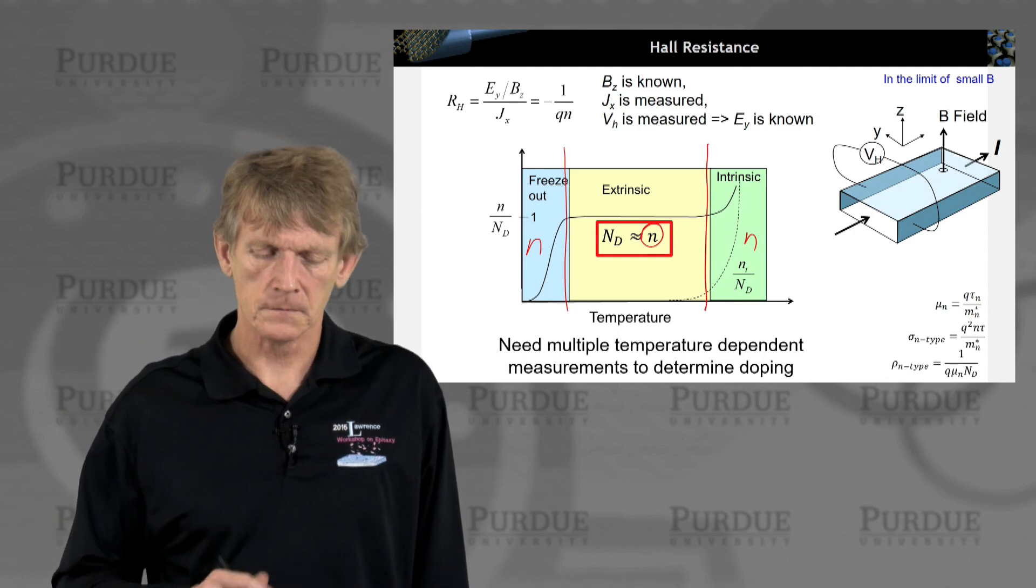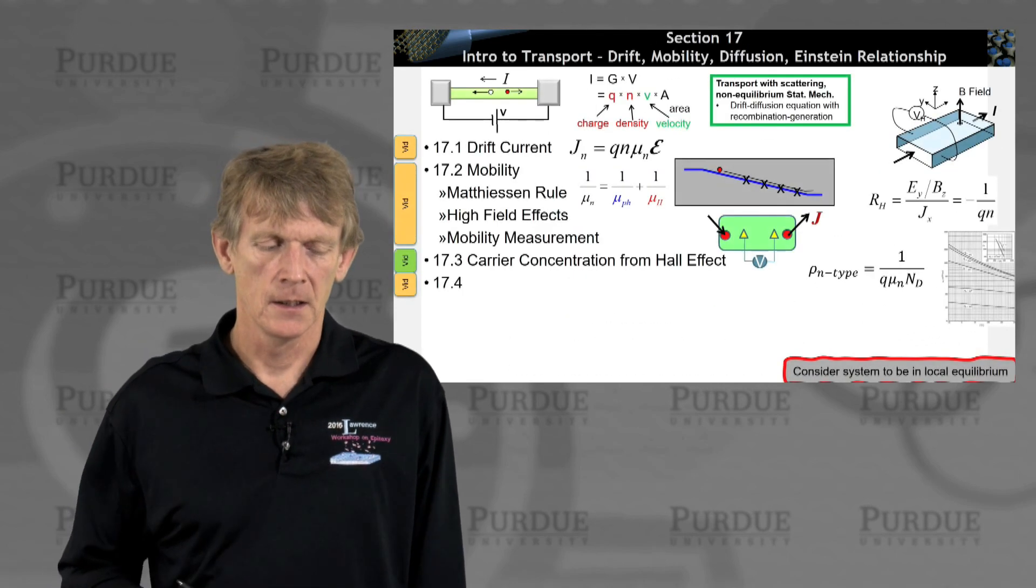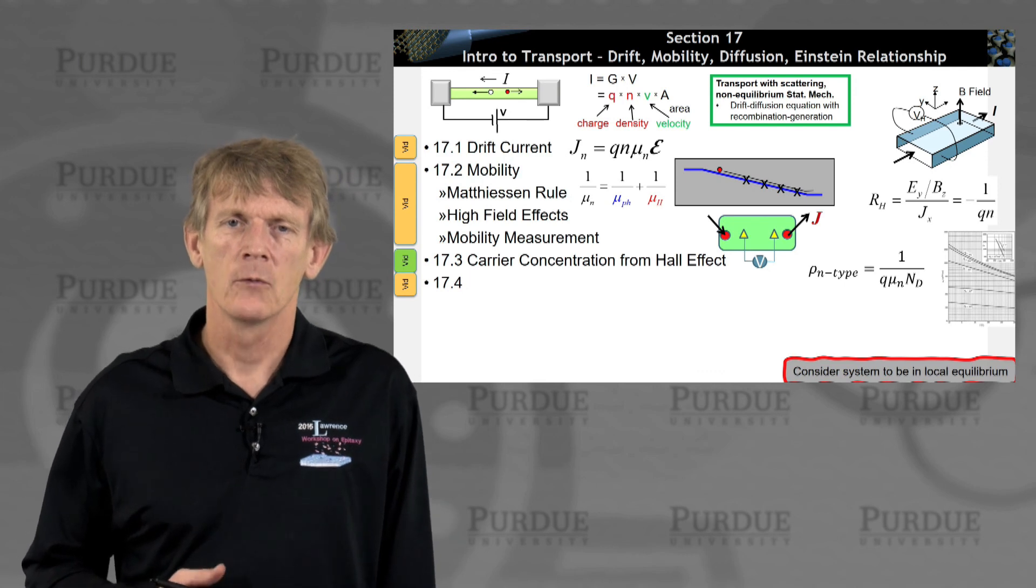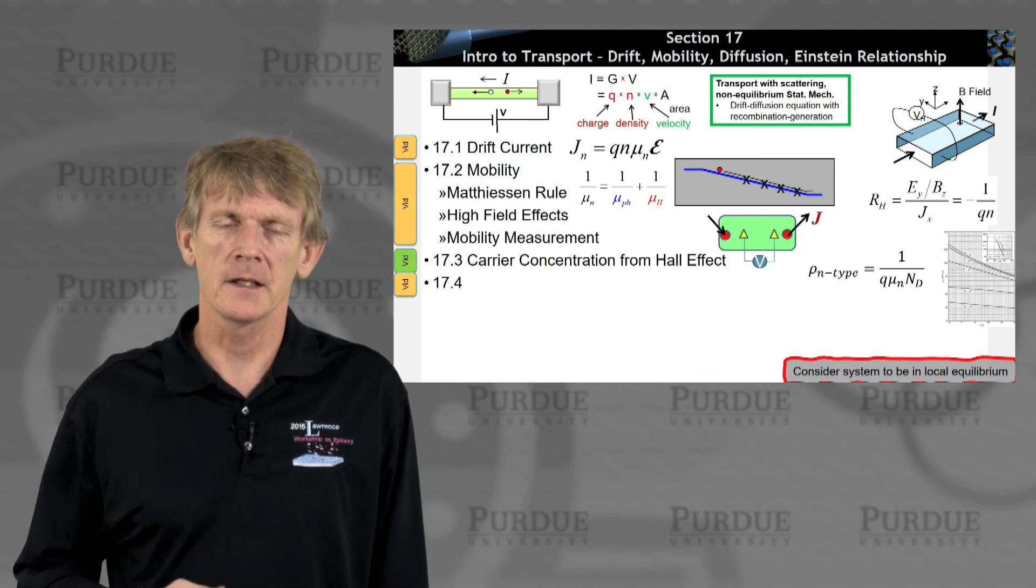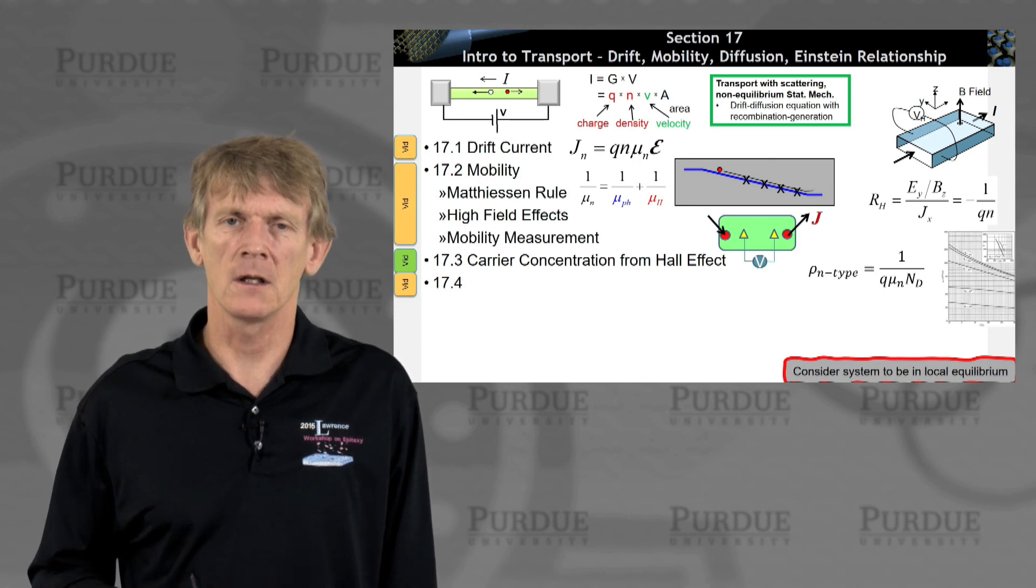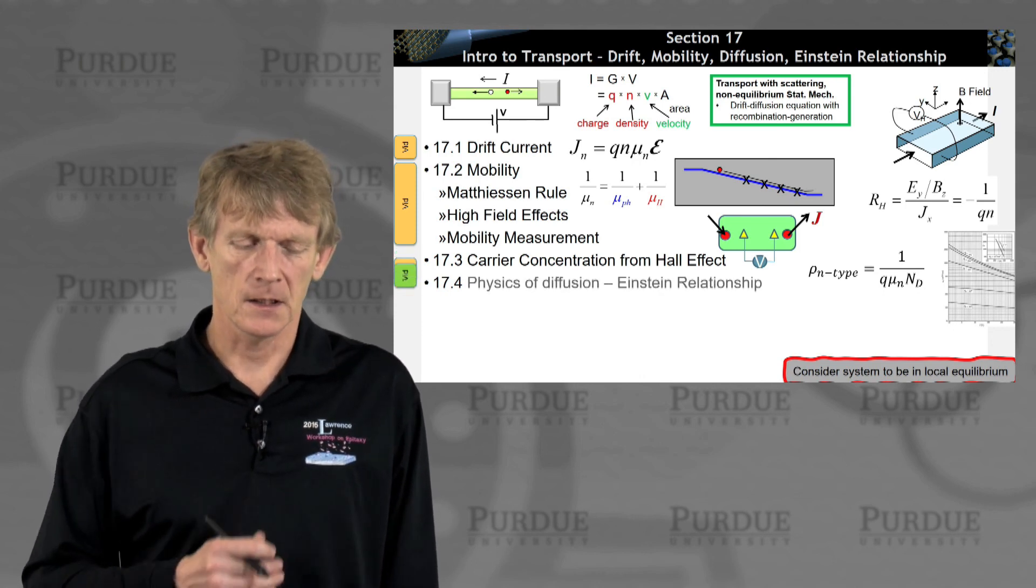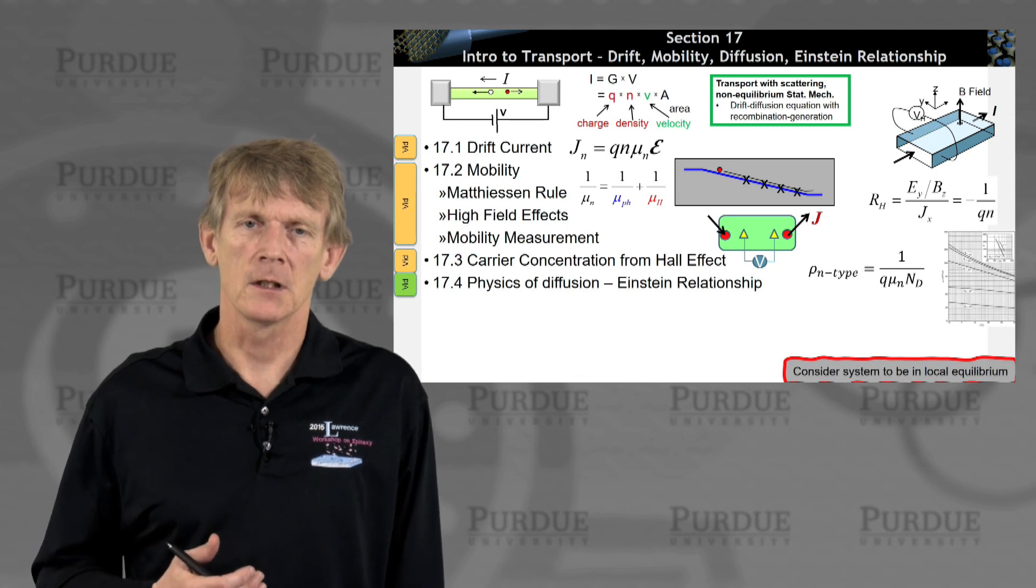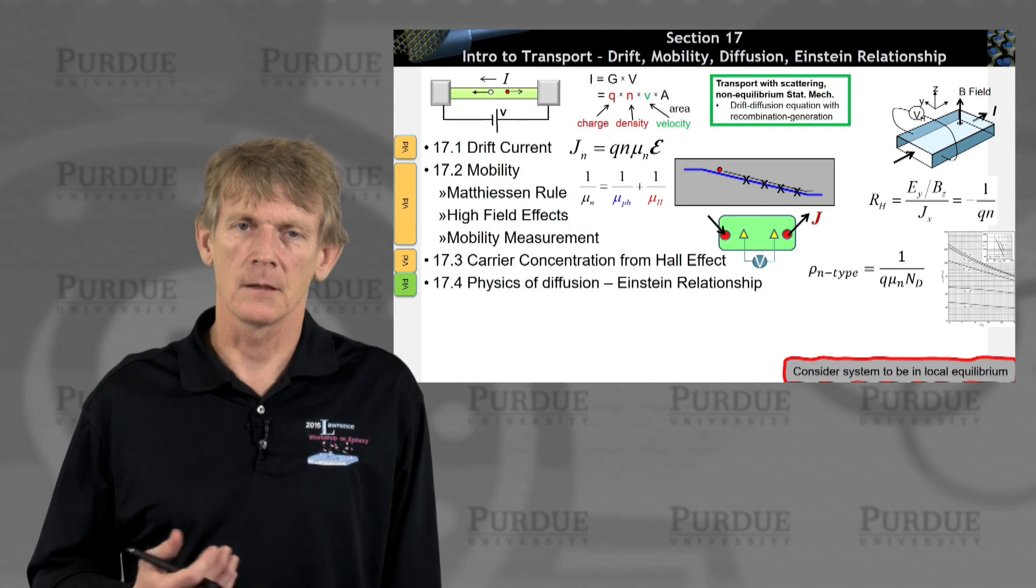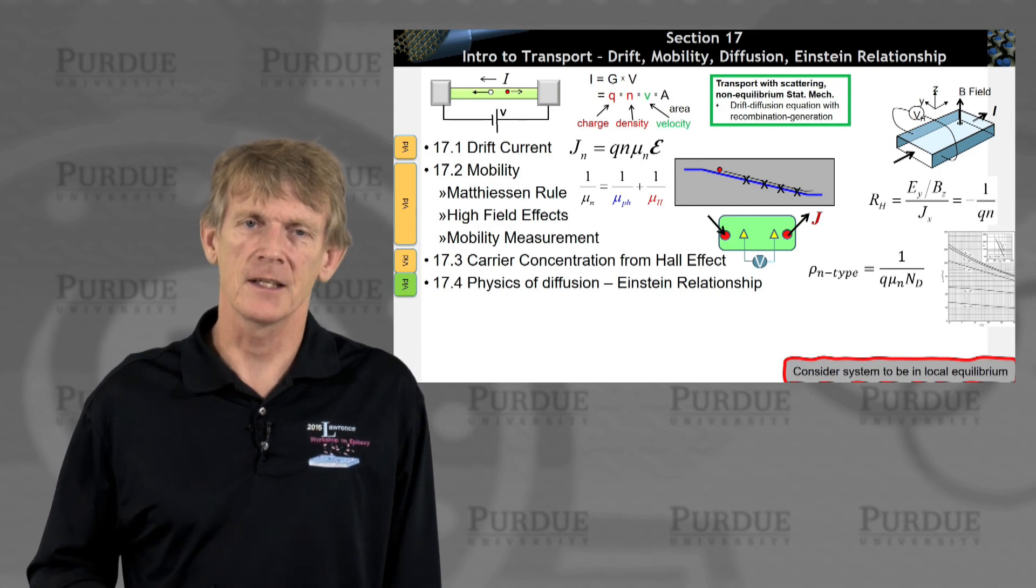So that being said, we're now back in the outline of this segment. We now have a way of calculating and measuring really a carrier concentration from the Hall effect, and the last segment will be a relationship between the diffusion coefficient and the mobility, and that will be in the next segment. I'll see you then.